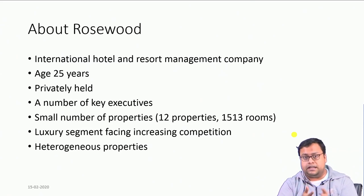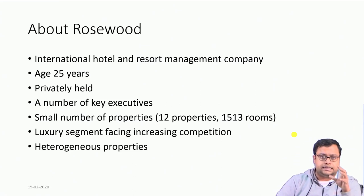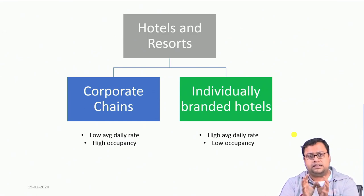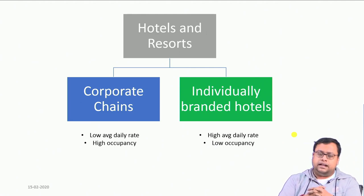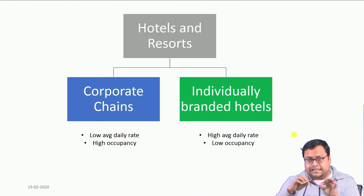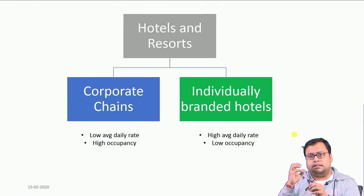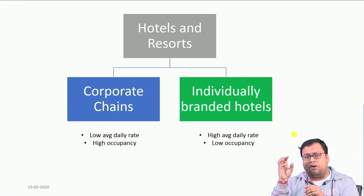Rosewood had very heterogeneous properties, each with their own situation. Hotels and resorts can be broken into two groups: corporate chains and individually branded hotels. Corporate chains are a single brand with presence in multiple cities under the same name — for example, Marriott, which has presence worldwide with similar atmosphere and services.